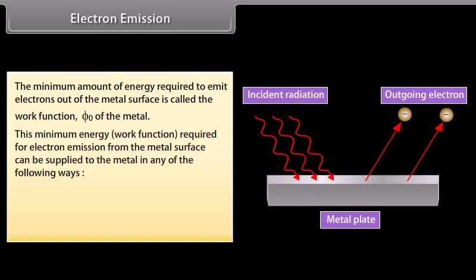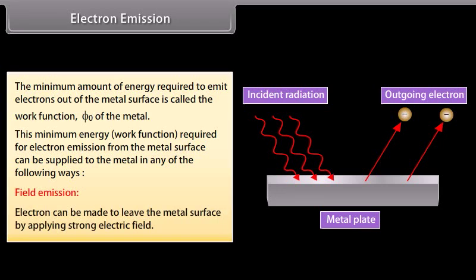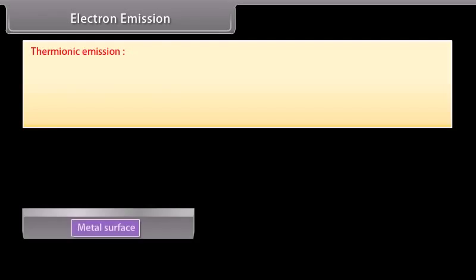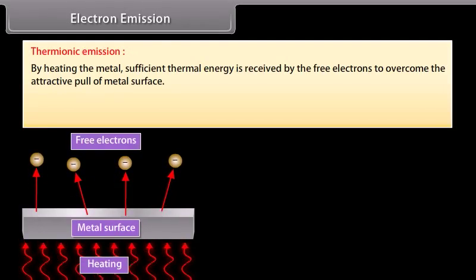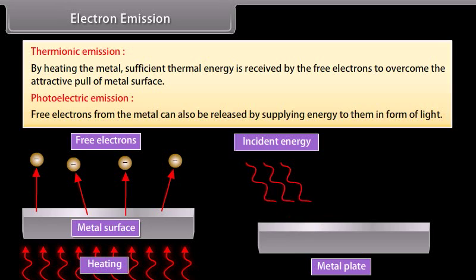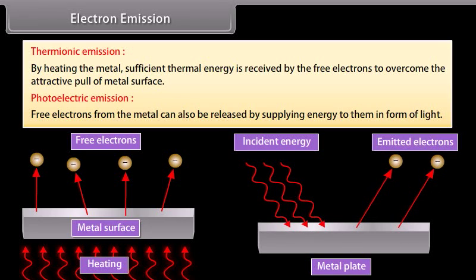The minimum amount of energy required to emit electrons out of the metal surface is called the work function phi-zero of the metal. This minimum energy can be supplied to the metal in any of the following ways: field emission - electrons can be made to leave the metal surface by applying a strong electric field; thermionic emission - by heating the metal, sufficient thermal energy is received by the free electrons to overcome the attractive pull of the metal surface; and photoelectric emission - free electrons from the metal can also be released by supplying energy to them in the form of light.